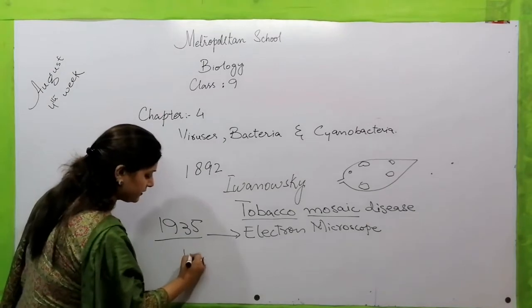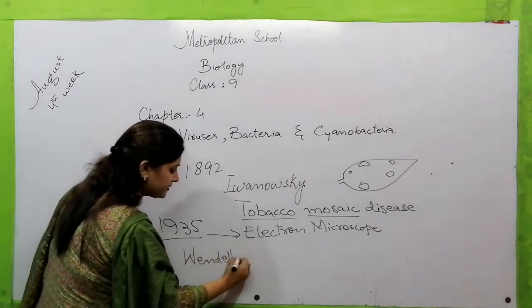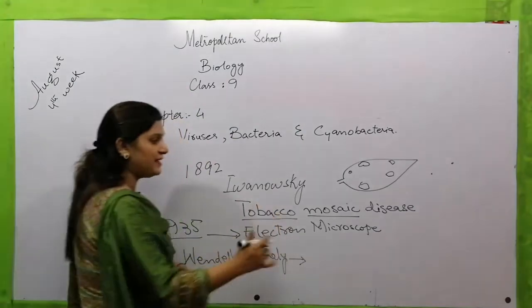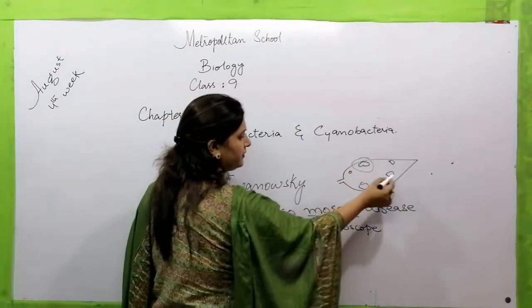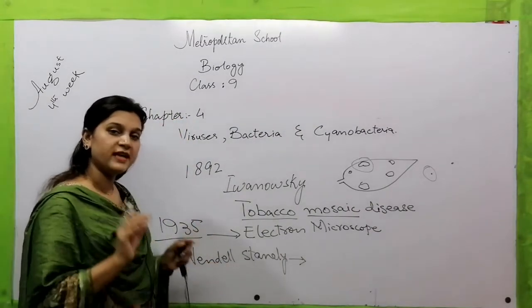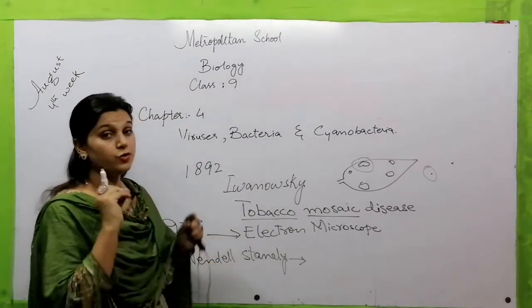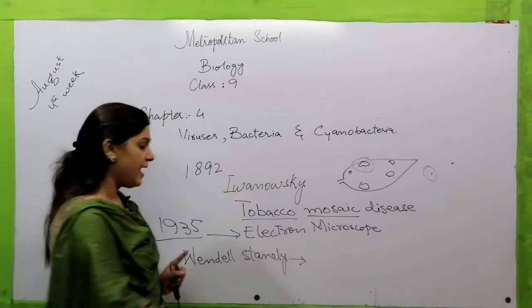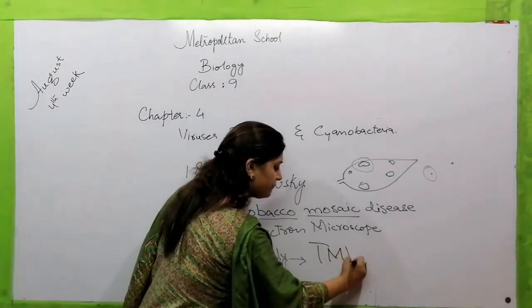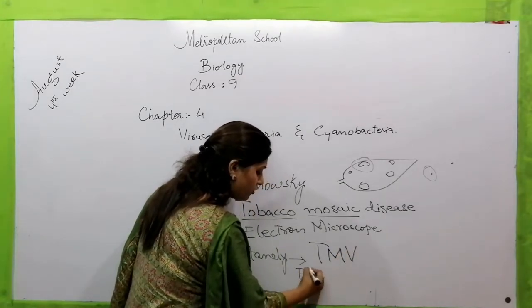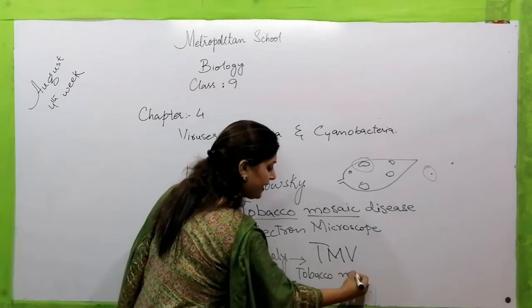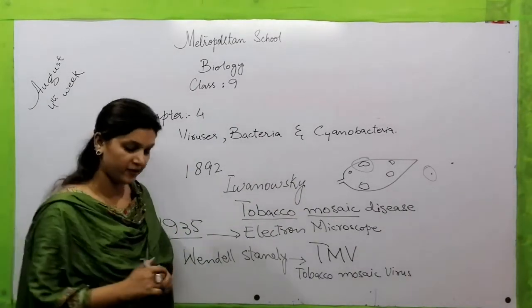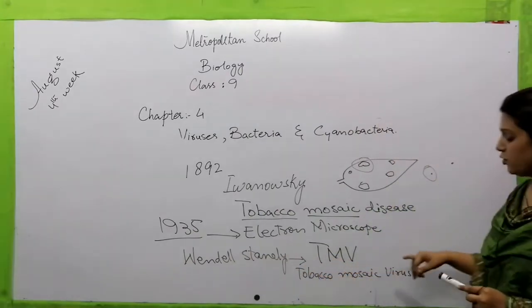Scientist Wendell Stanley crystallized that infectious particle — the particle from the tobacco mosaic disease that was smaller than bacteria. Wendell Stanley crystallized it and named it TMV — tobacco mosaic virus. So the first virus to be discovered was named the tobacco mosaic virus.